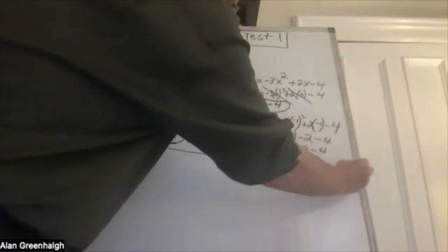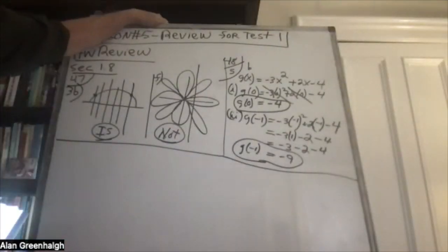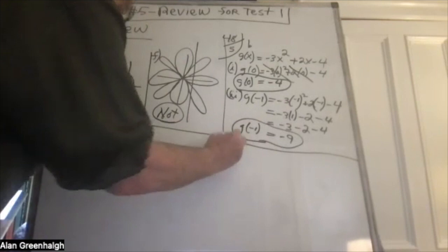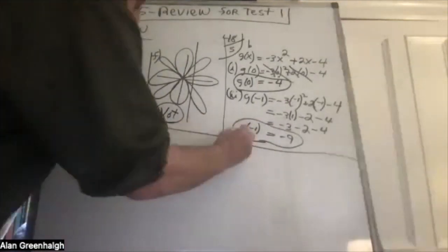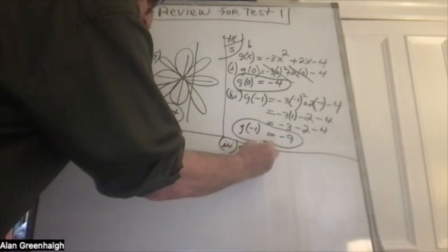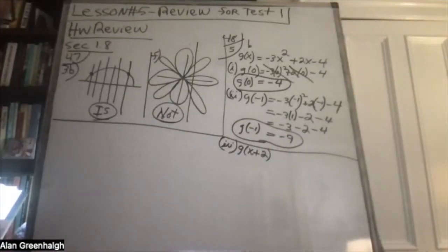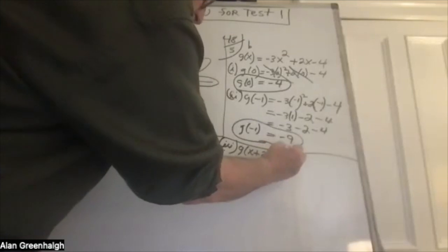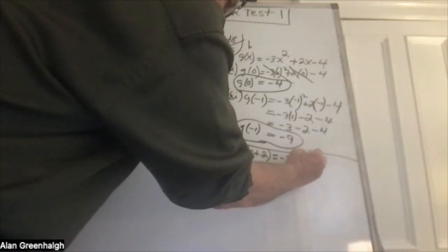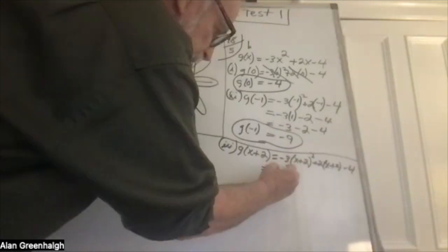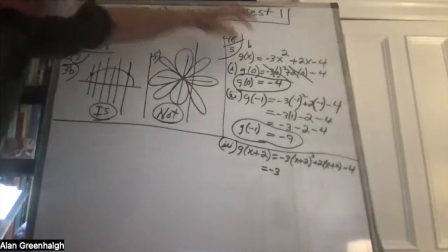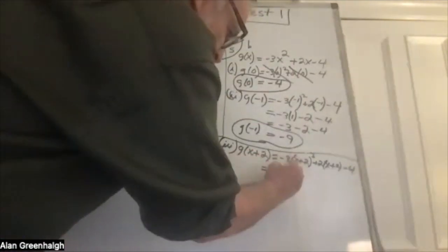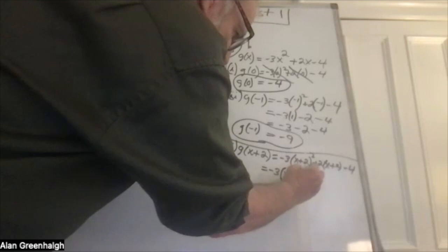Part three of the same question asks you to find g of x plus two. You substitute x plus two wherever x appears: negative three times (x plus two) squared, plus two times (x plus two), minus four. The hardest part is expanding x plus two squared, which you get by multiplying x plus two times x plus two, giving x squared plus four x plus four.